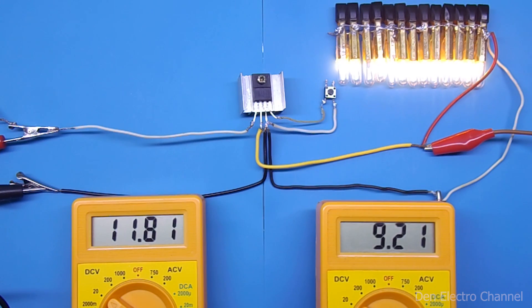Now let's see to what level we can lower the input voltage so that the output voltage does not change. At the input, I will slowly lower the voltage and monitor what happens at the output.